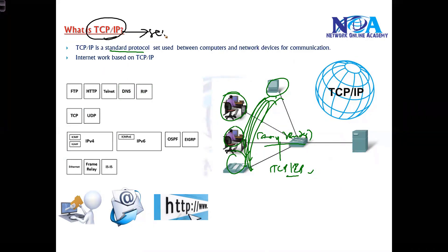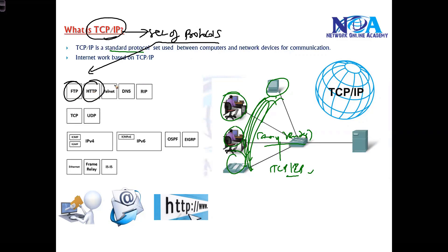TCP/IP is a set of protocols — not a single protocol. Within it there are different protocols that do different jobs. For example, FTP is responsible for file transfer. For web access there is HTTP. For remote access we have Telnet. For name resolution we have DNS. We'll discuss these individual TCP/IP protocols in more detail in a separate TCP/IP section. In this section, I just want to focus more on the IP addressing part.